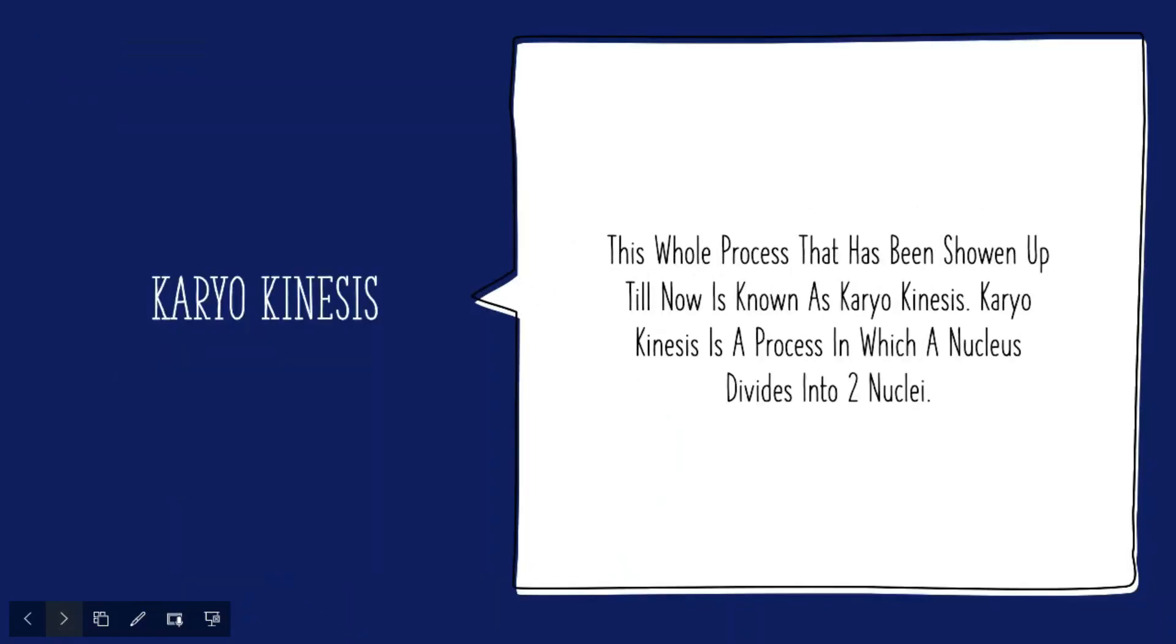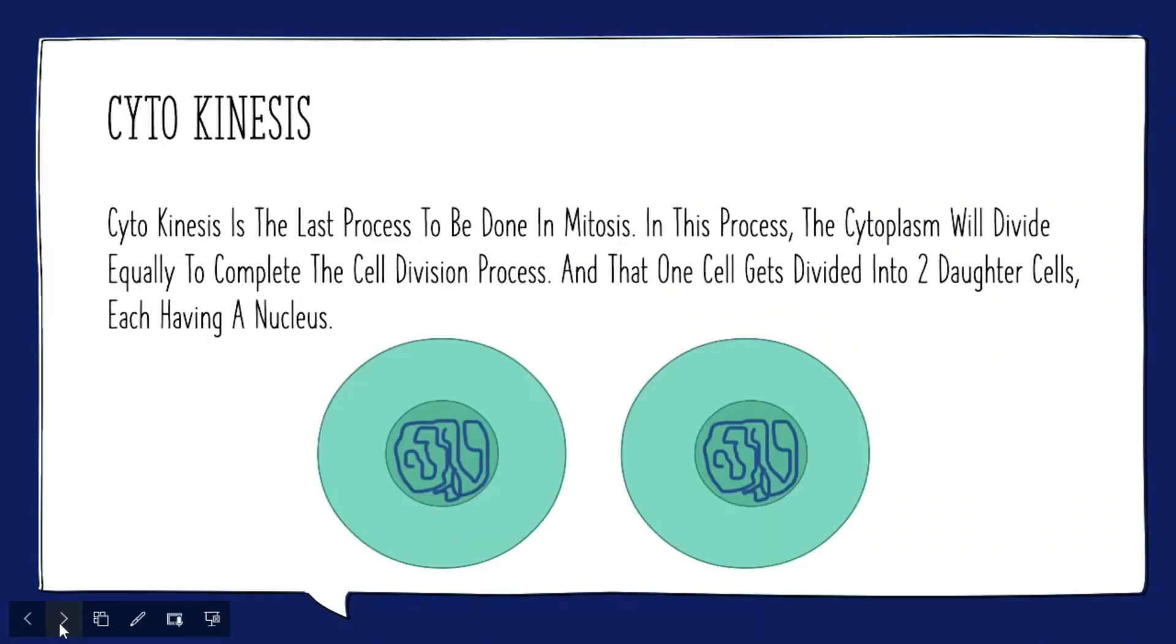This whole process that has been shown up till now is known as karyokinesis. Karyokinesis is a process in which a nucleus divides into two nuclei.